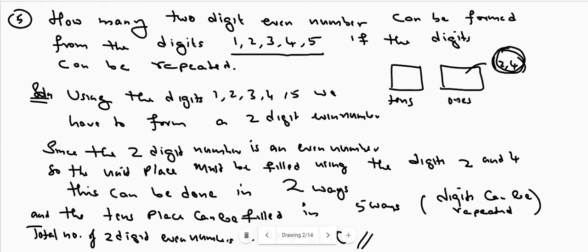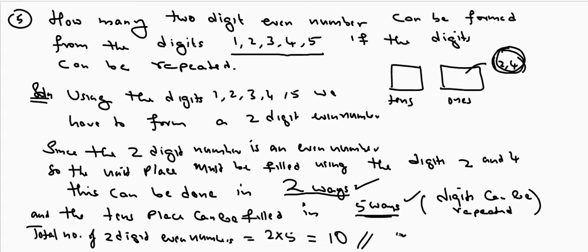Since we need a two-digit even number, the ones place can be filled using digits 2 and 4 only — numbers ending with 2, 4, 6, 8, or 0 are even. So the ones place can be filled in two ways. For the tens place, since repetition is allowed, we can use any of the five digits including the one already used in the ones place. So the tens place can be filled in five ways. The total number of two-digit even numbers is 2 into 5, which is ten.